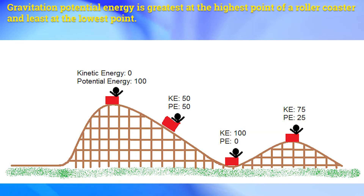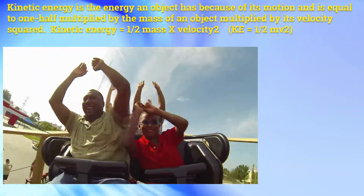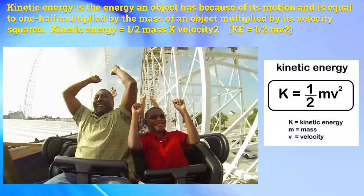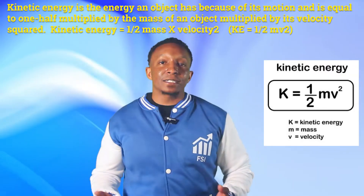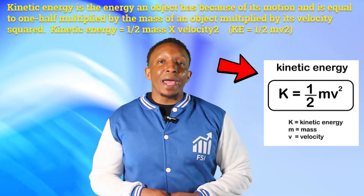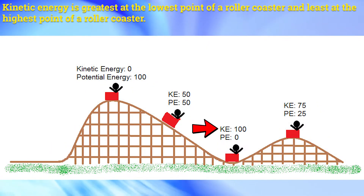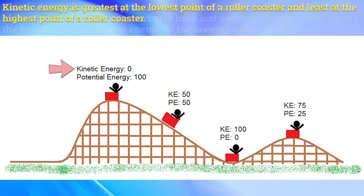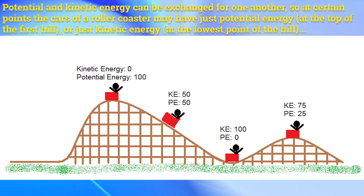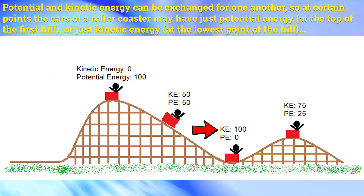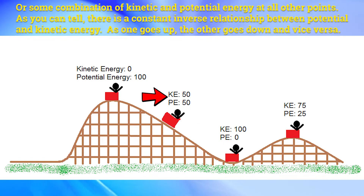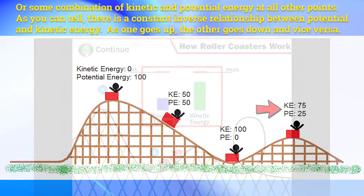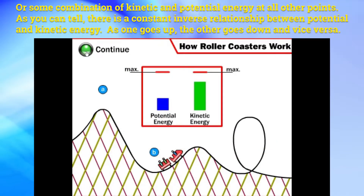So basically, gravitational potential energy is greatest at the highest point of a roller coaster and least at the lowest point. Kinetic energy is the energy an object has because of its motion and is equal to one-half multiplied by the mass of an object multiplied by its velocity squared — or kinetic energy equals one-half of the mass times velocity squared. Kinetic energy is greatest at the lowest point of a roller coaster and least at the highest point. Potential and kinetic energy can be exchanged for one another, and there is a constant inverse relationship between them — as one goes up, the other goes down.